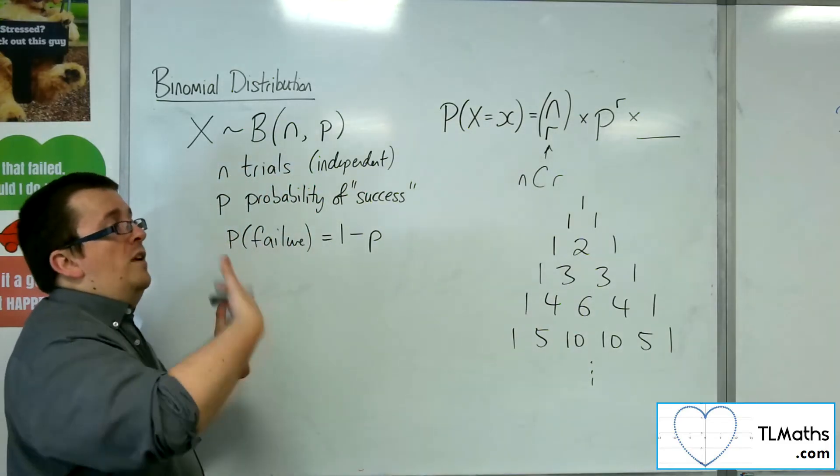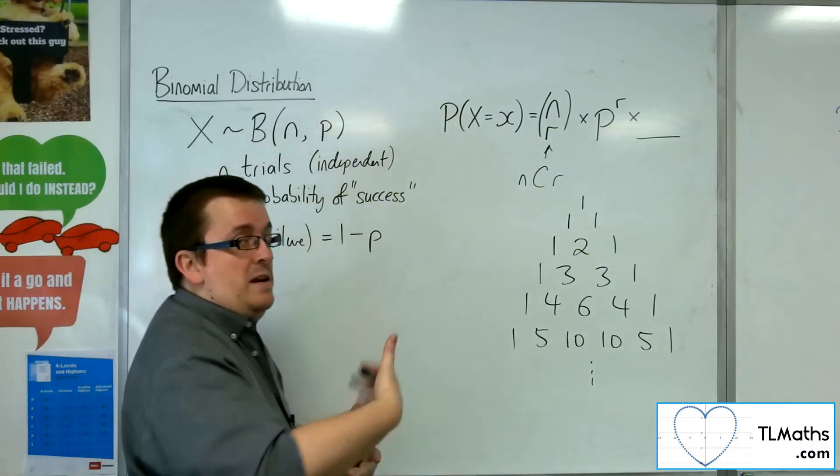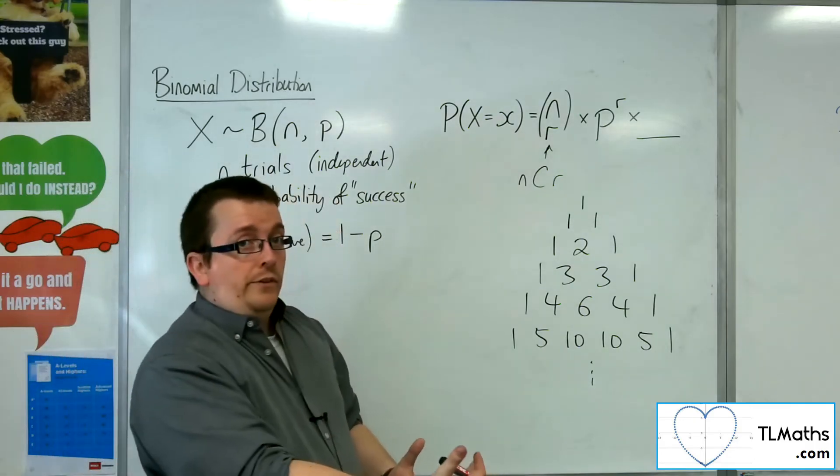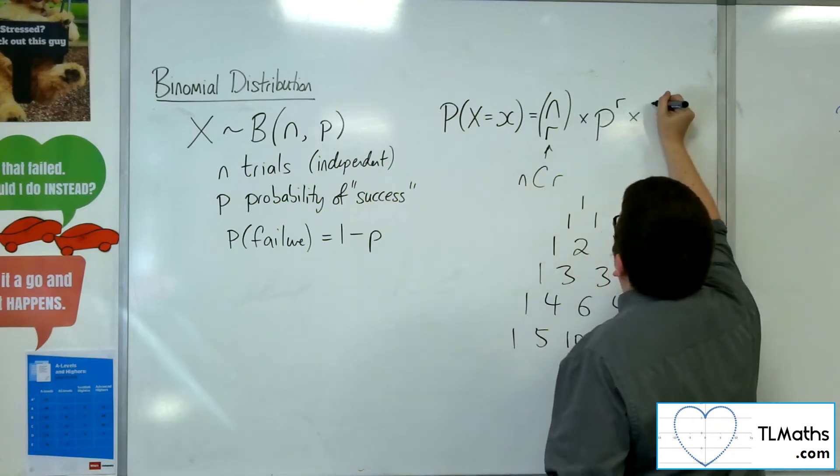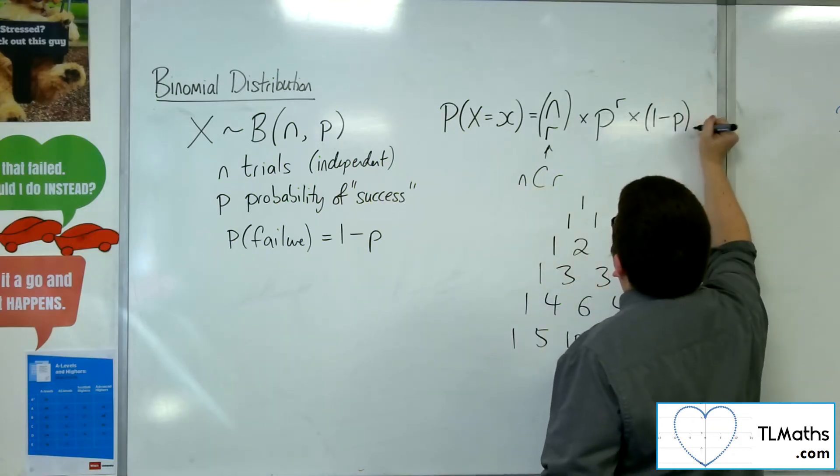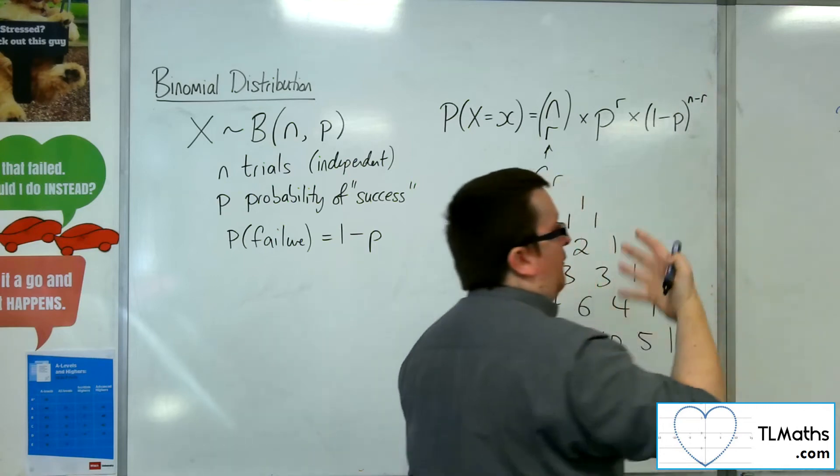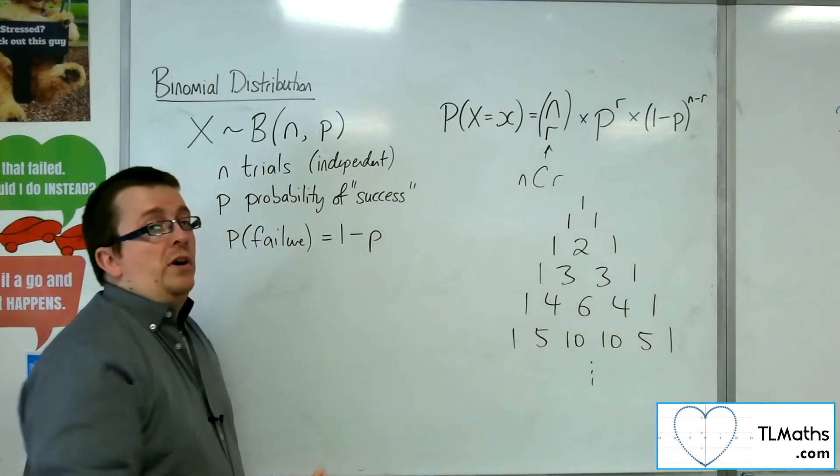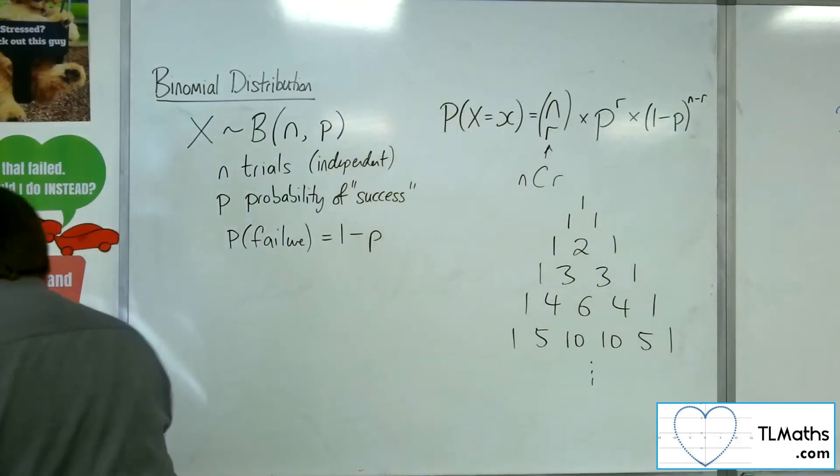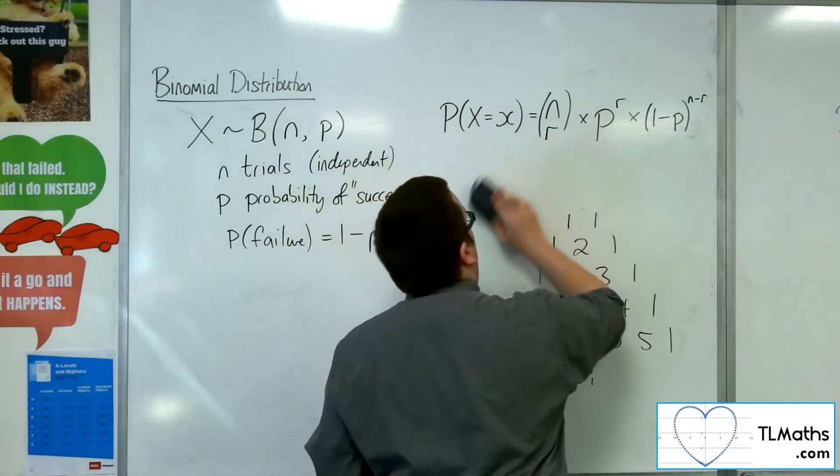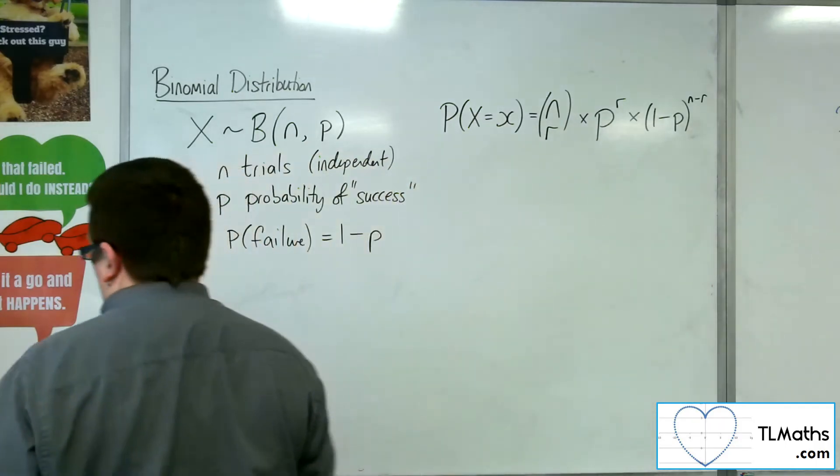So if you want r successes, then you're going to want n minus r failures. So the failure, remember, is one minus p, and that is to the power of n minus r, because you want the failures to appear n minus r times. So this is your formula for binomial probability.